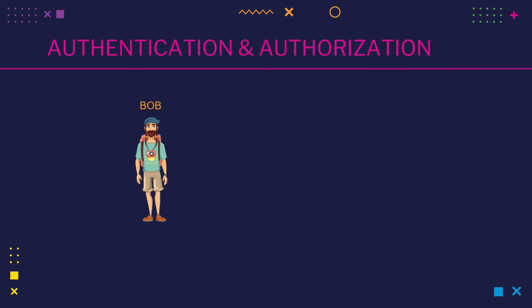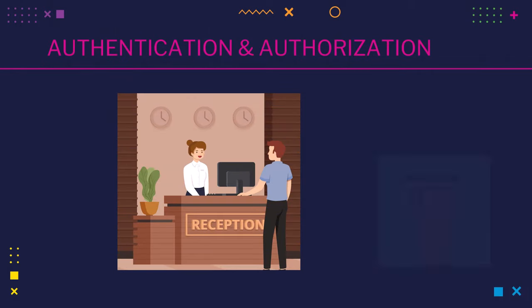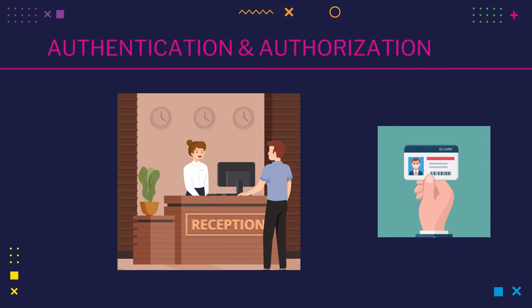Let's meet Bob for our example. Bob has made a hotel reservation for his trip. When Bob reaches the hotel, the first thing they will ask for is some form of identification. Based on that, they will confirm who Bob really is. Even if Bob tells the front desk his name is Bob, they will still require an ID to confirm that Bob is actually the Bob he is claiming to be. They know that from the ID because there are certain claims on an ID like name and date of birth — these claims make up Bob's identification. Authentication is all about determining the identity.